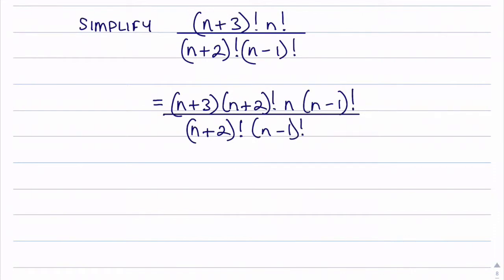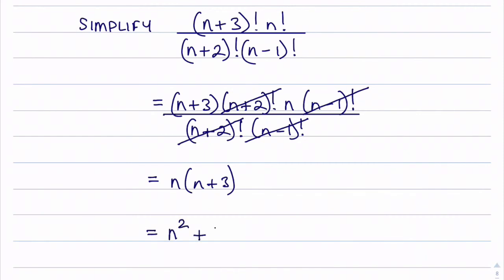Now hopefully you can see I can cancel a few things here. I can cancel the n plus 2 factorial here with this one here, and cancel the n minus 1 with this n minus 1. That leaves me with n multiplied by n plus 3. I can expand the brackets and get n squared plus 3n.